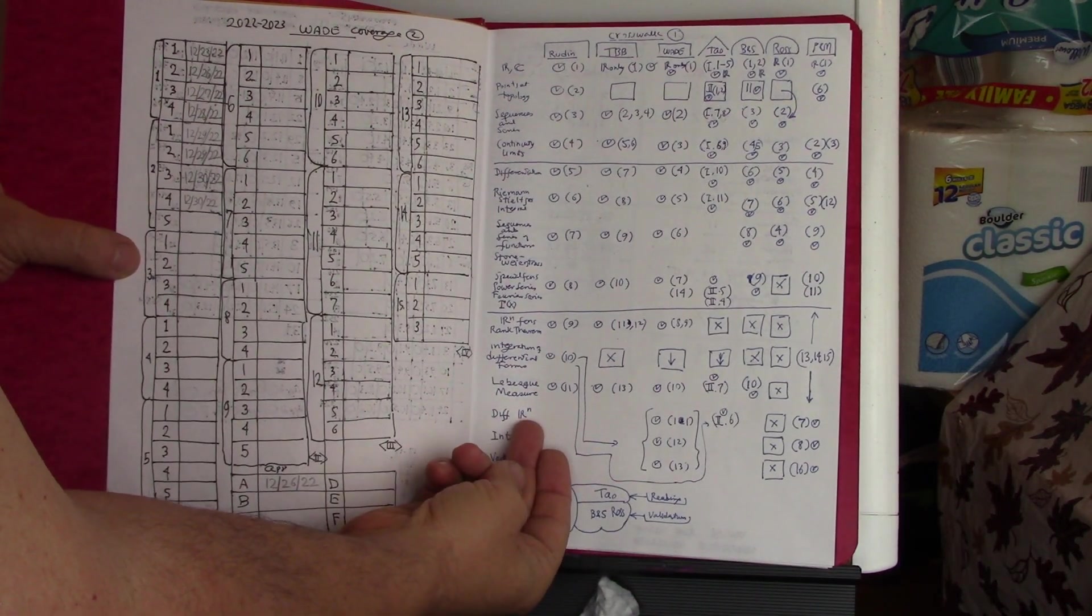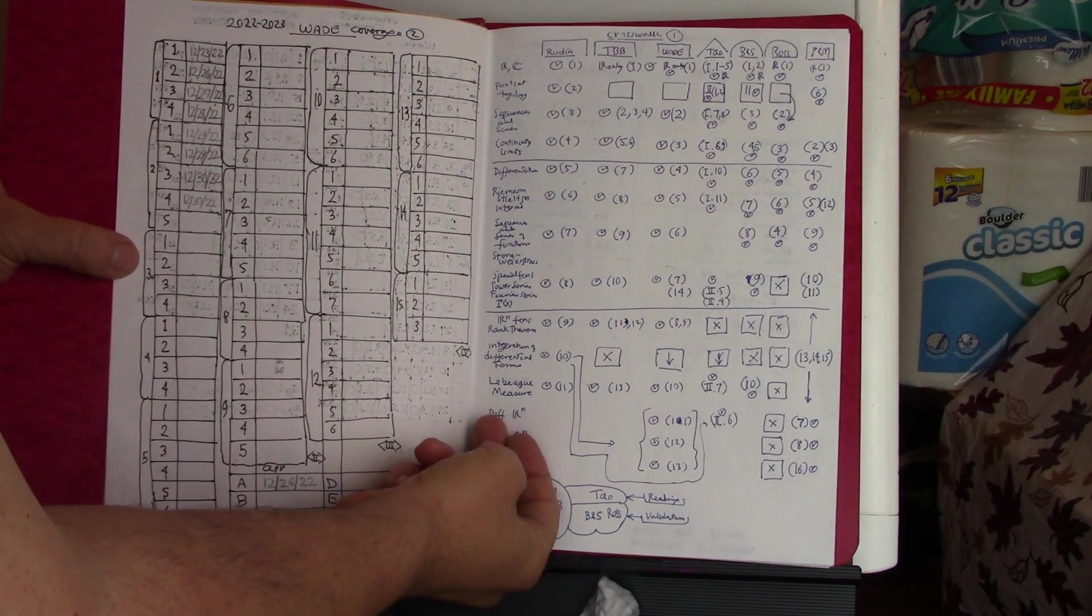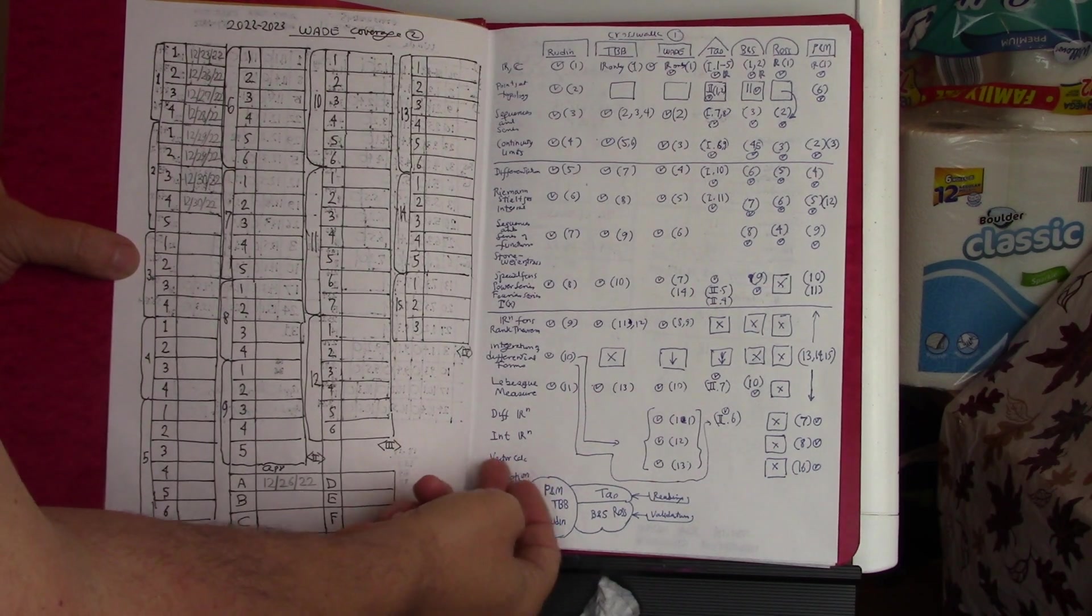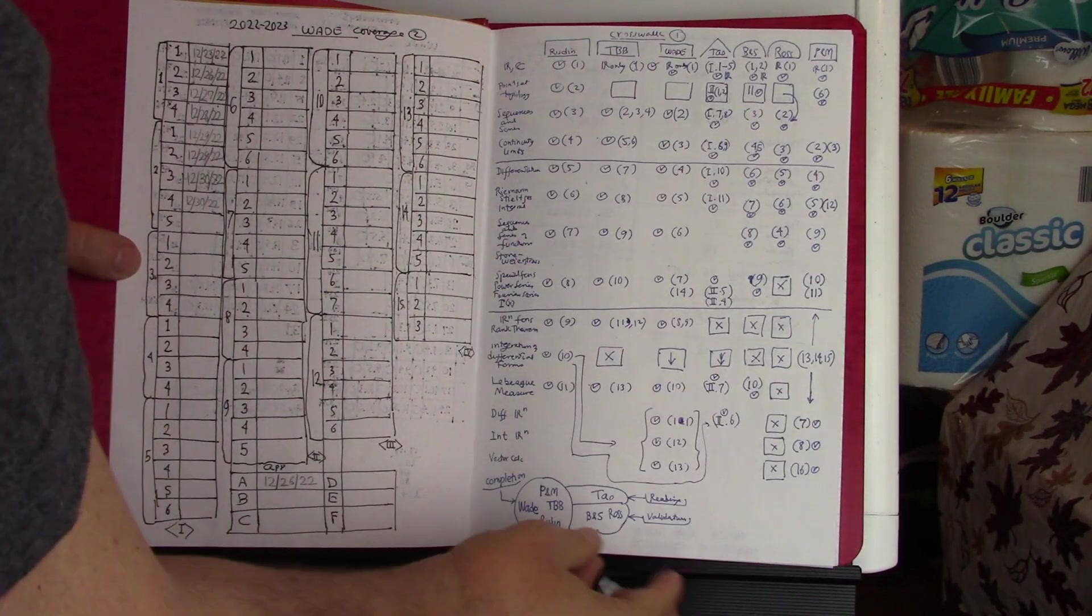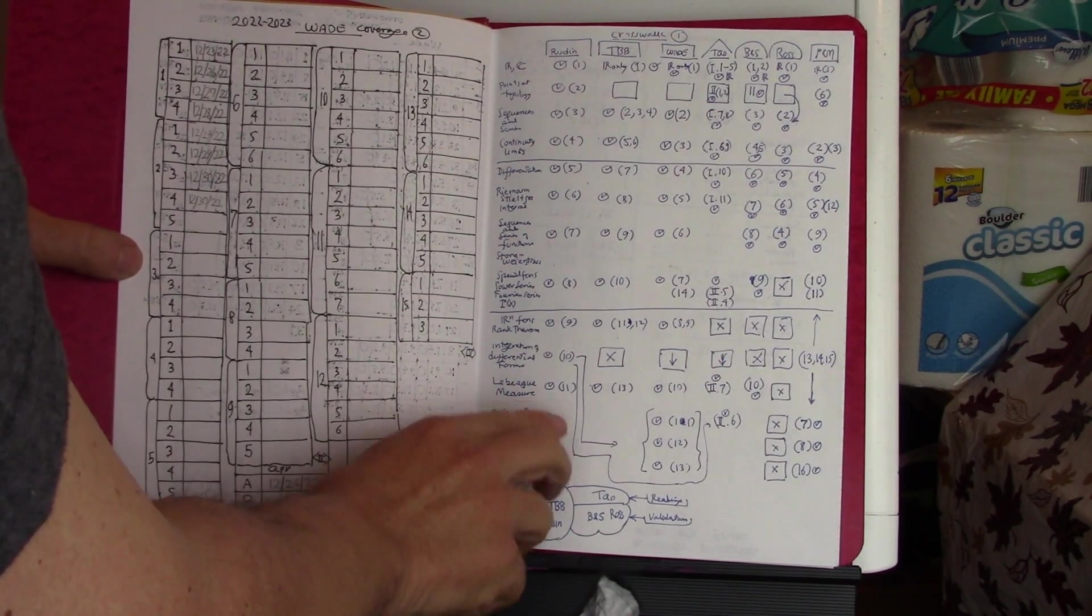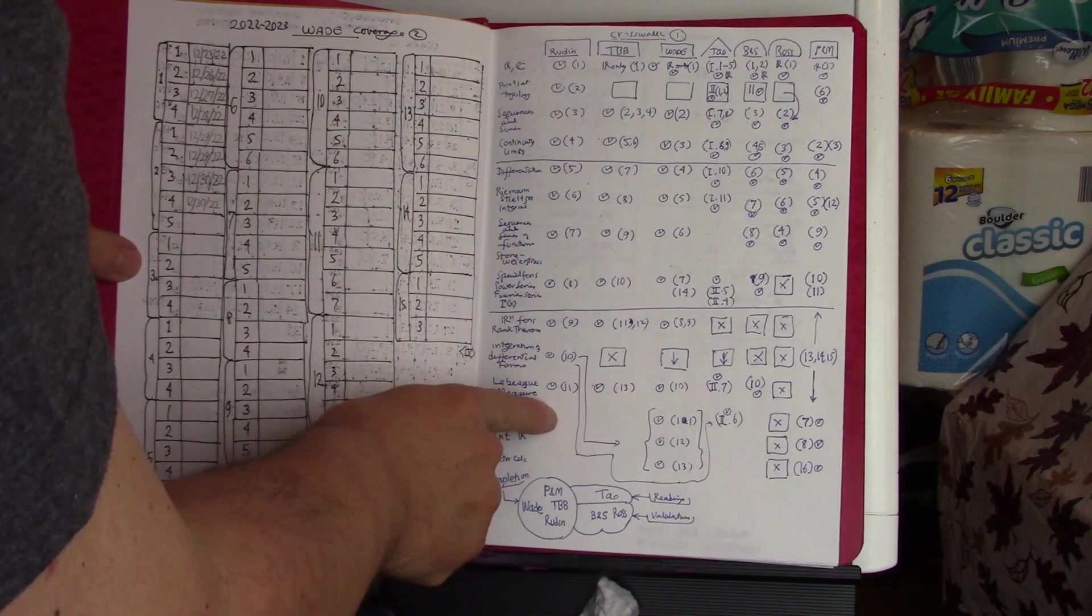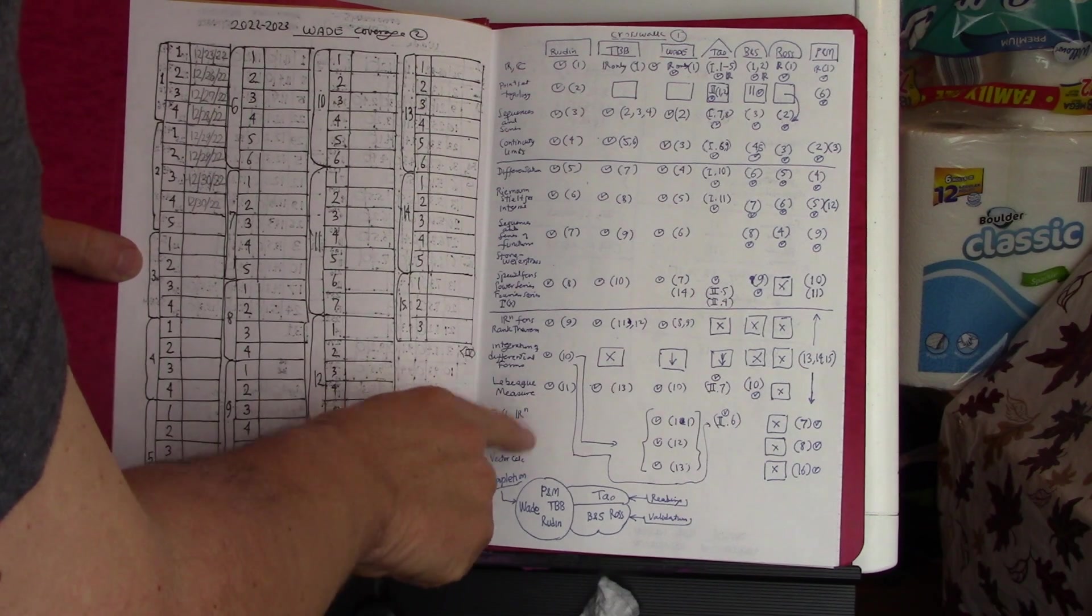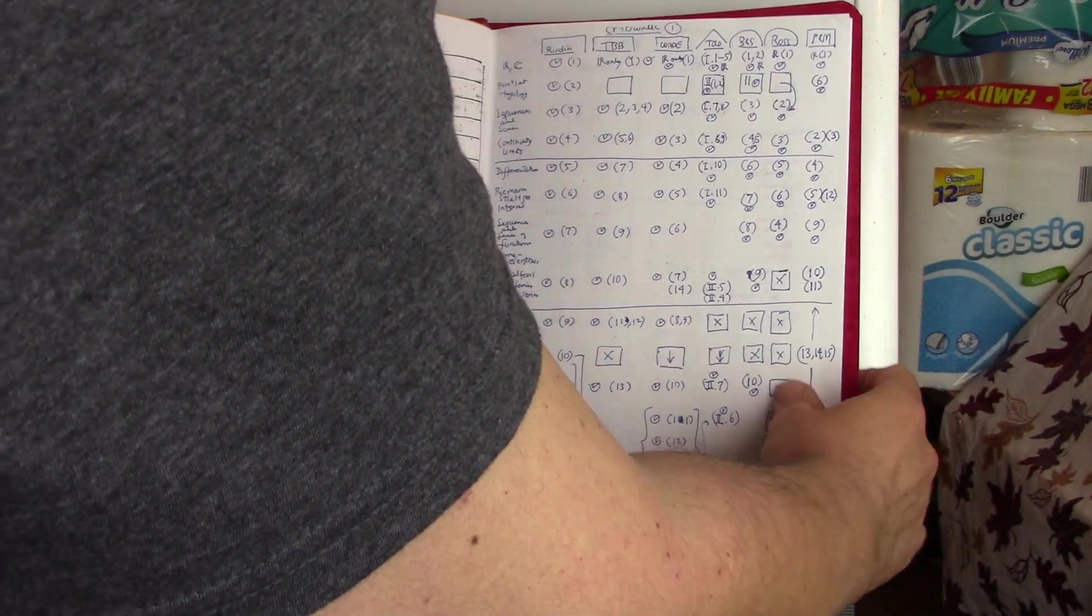Then when you get down to n-dimensional real space, differentiation, integration, the material, I don't know. I haven't gotten deep enough to understand if the books that I put down that don't have anything on it actually do. But I think they don't. And I'm not sure that Rudin does, but it may, and I just missed it because it's described in some other way. But either way, the winner was Wade, and that's the book that I'm going to be focusing on.